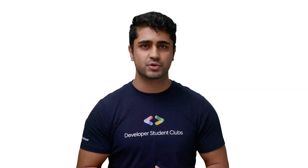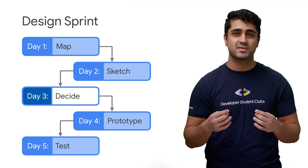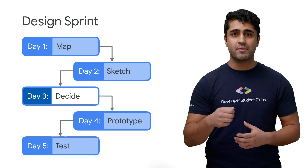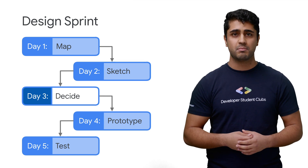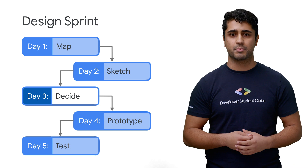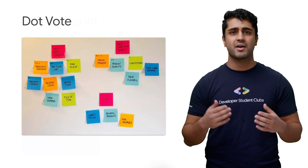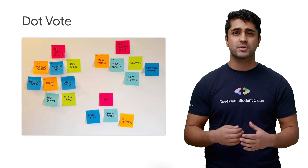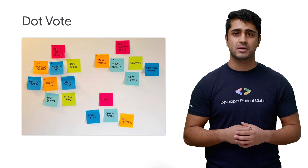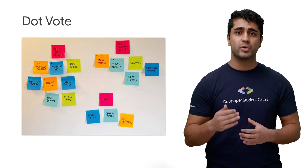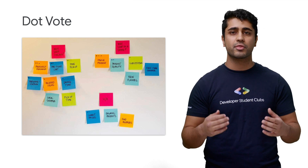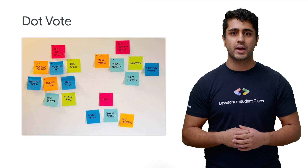Now we have this big pool of solutions, and the next step is to pick the best one. For this step, I'd recommend using the dot voting method, because it's super simple. Just have every team member hang their sketches on a wall and quickly present their solution. Then when it's time to vote, have each team member draw a dot on the three solutions they like most.